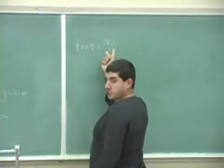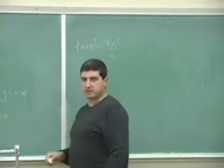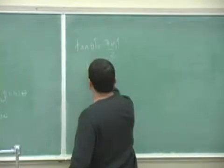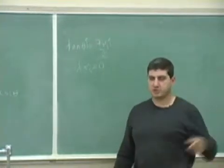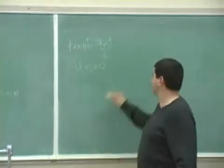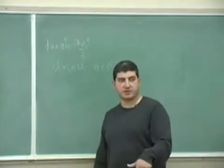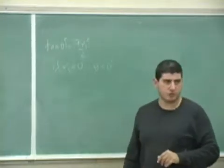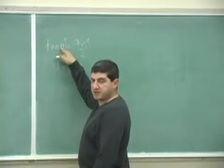Notice that the equation makes sense: the greater the mu s, the greater the angle you can tilt it. Here's what it's telling you. If mu s is zero — if there's no friction — then tangent of theta is zero, so theta is zero. Does that make sense? If there's no friction between the rolling object and the surface, you can't tilt it at all — the minute you tilt it, the thing slides down; it's not going to roll. The bigger the mu s, the bigger the tangent, because tangent is an increasing function.